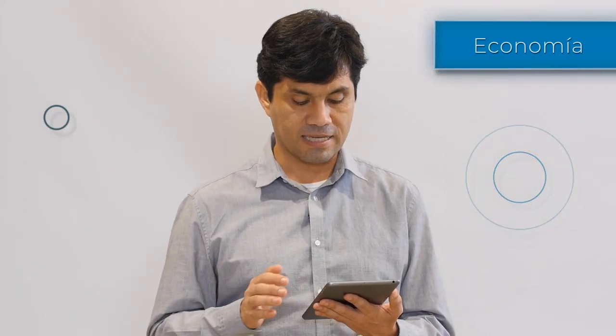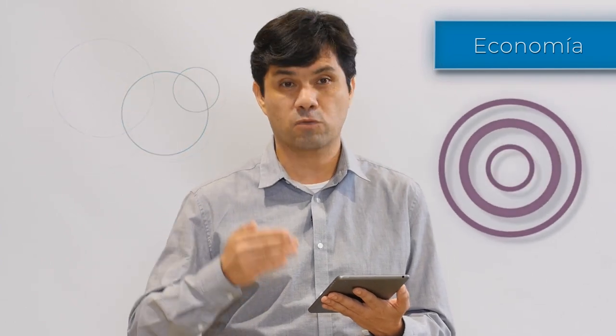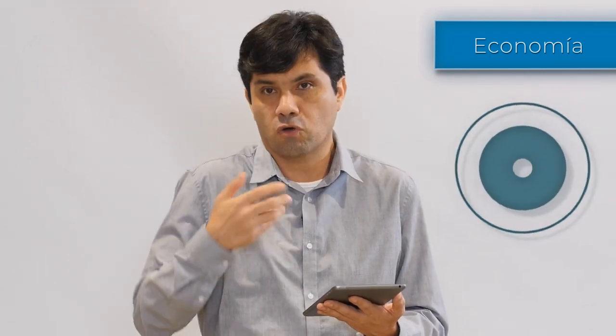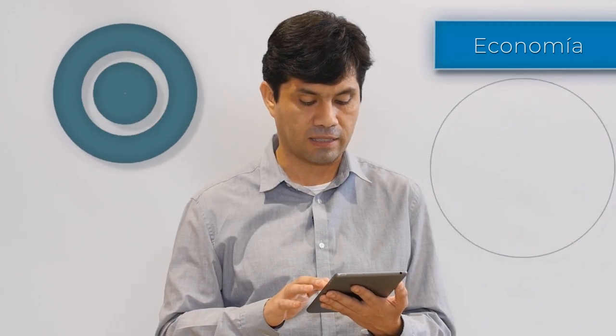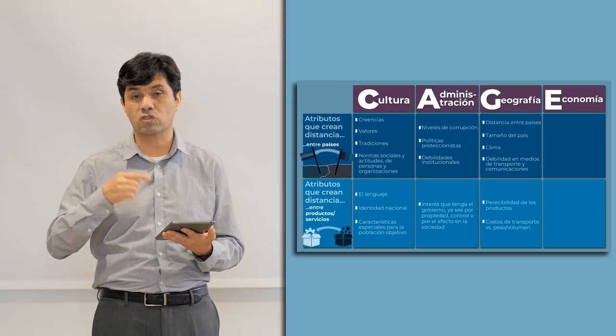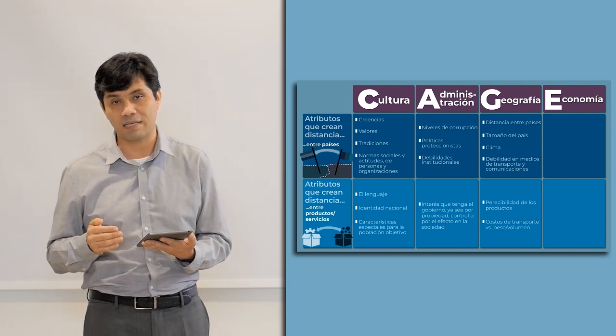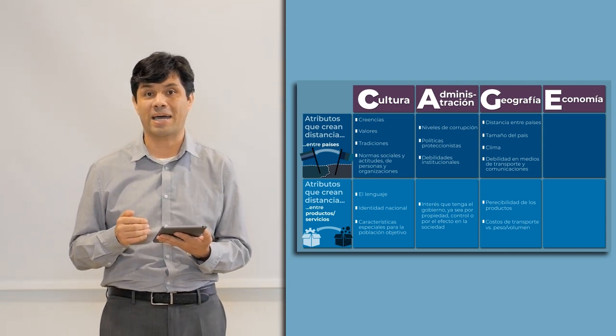El cuarto y último elemento del CAGE es precisamente la economía. Se dice que aunque un país esté teniendo ingresos per cápita altos, esto podría facilitar la compra de bienes más costosos, porque los estamos importando y son más costosos, y con unos ingresos más altos podríamos adquirirlos. Sin embargo, ingresos altos también suponen salarios altos, lo que implicaría que nuestros costos de producción se incrementan, y esto es una dificultad adicional que tendríamos que tener en cuenta para exportar.